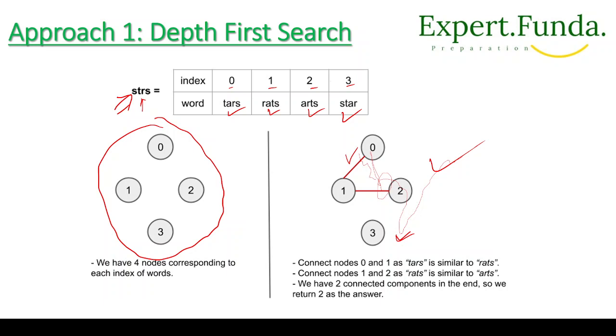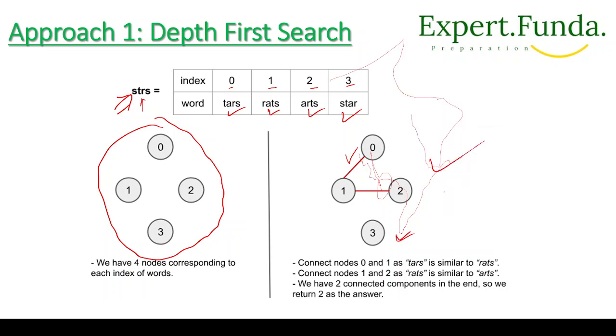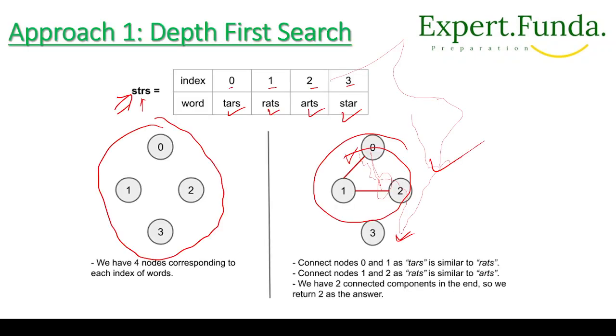We have two connected components and we have to return that as our answer — return two. Now we understand the implementation. We will go to the browser and implement the depth-first search and connect the values.